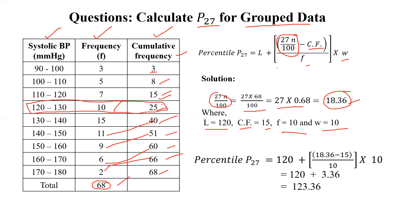Once we got all the values, we'll write the formula and then we'll put the value, all values we'll put here in the formula. If we see and calculate, we'll find out final P27 is 123.36.